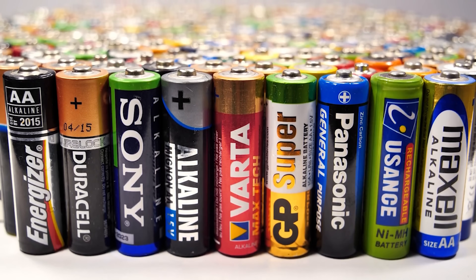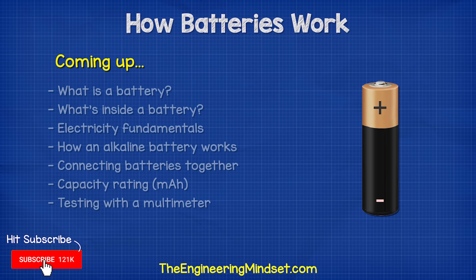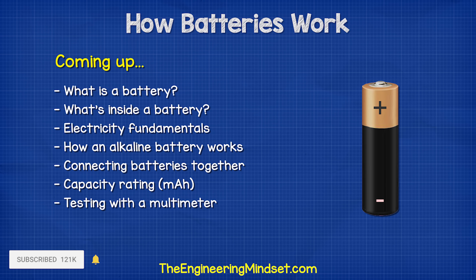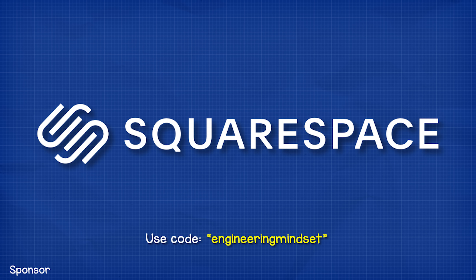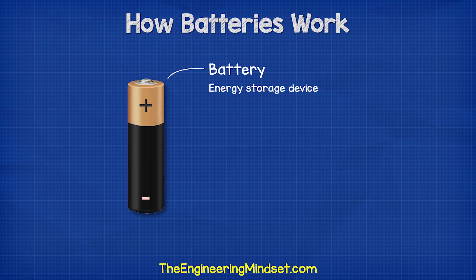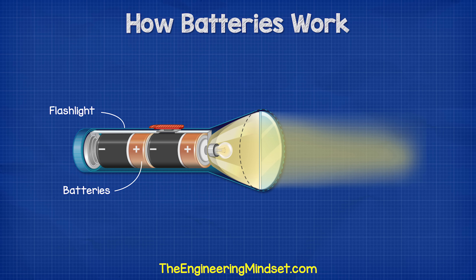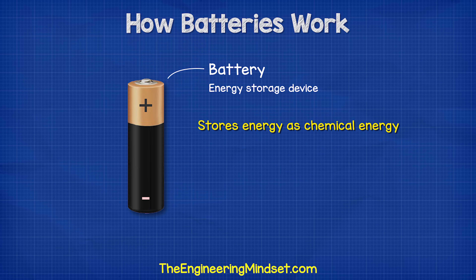The standard household alkaline battery — we use these every day all over the world. But how do they work? A battery is a device used to store energy for a later point when we need it. We use batteries to power small electrical devices such as a flashlight. The energy is stored as chemical energy and this can be turned into electrical energy for when we need it.